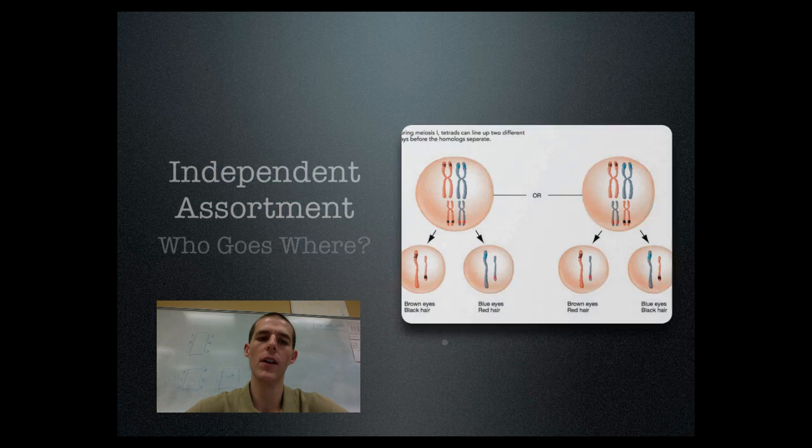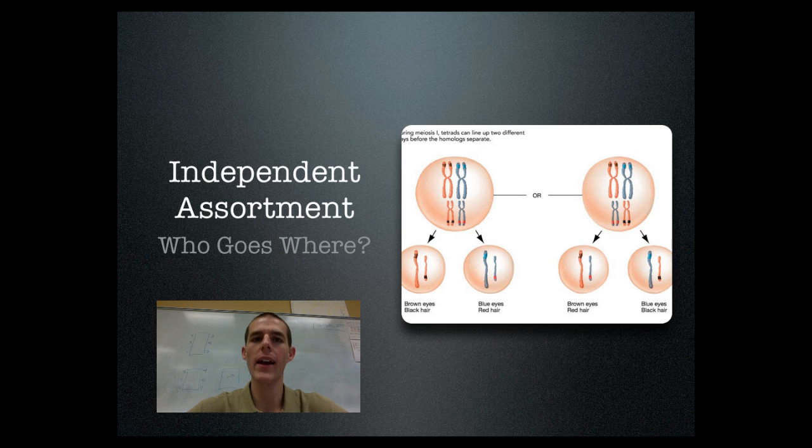First major source of variation is independent assortment. And what this is expressing is where chromosomes go during meiosis. Now, we have talked about in a previous video, in meiosis, you have got metaphase where your chromosomes line up across the middle of this cell, and then half the chromosomes, the ones that are on this side, they get dropped into one of the daughter cells, the chromosomes on this side, they get dropped into the other daughter cell.